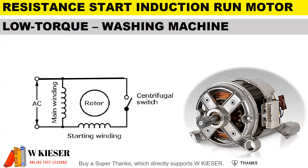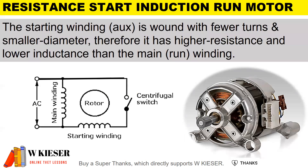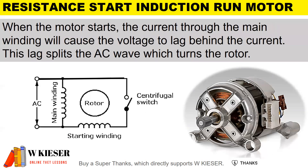The resistance start induction run motor is mainly used in washing machines because it has low torque. In terms of operation, the start winding is wound with fewer turns and a smaller diameter, giving it higher resistance and lower inductance than the main winding. When the motor starts, the current through the main winding causes the voltage to lag behind the current, and this lag splits the AC wave which turns the rotor.